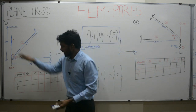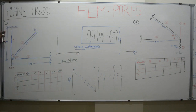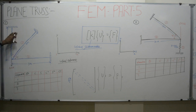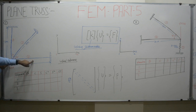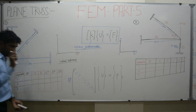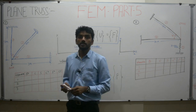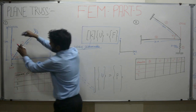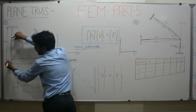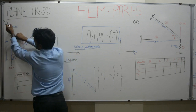Now, given this particular truss, the first thing I need to do is number the elements. I have already numbered them 1, 2, and 3. These numberings follow a particular sequence — we go from left upward, then come back down, then element 2, then element 3. Once element numbering is done, the second step is to find out the node numbering. Node numbering also follows the element numbering sequence. For element 1, I start from node 1 and end at node 2.